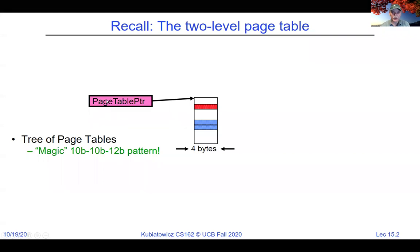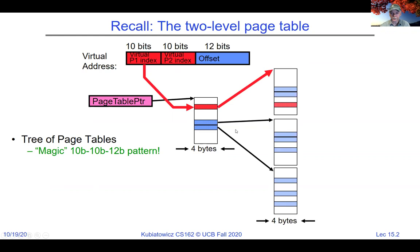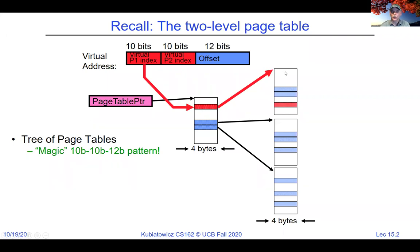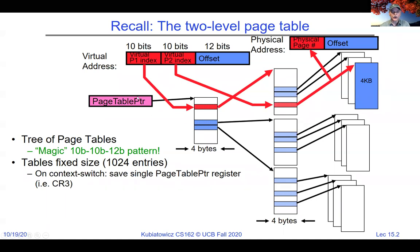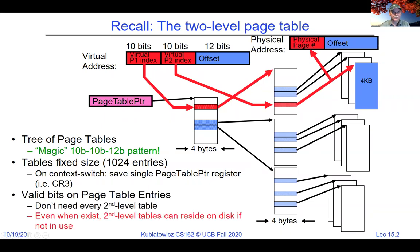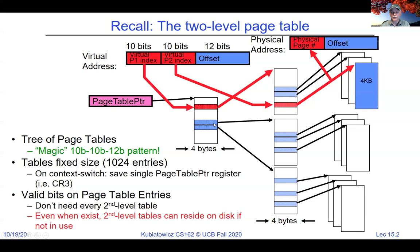You can do this 10-10-12 pattern. You have the root of the page table pointing at the root page. The first 10 bits select one of 1,024 entries, which points to the second-level page table. The next 10 bits point to an entry there — one of 1,024 entries — and then finally we point to the actual page. On a context switch, you save this page table pointer, and the rest is in memory. There are valid bits on page table entries, so you can page out parts of the page table. You can set an invalid bit in the top-level entry and page out the second level.